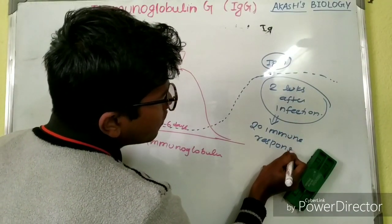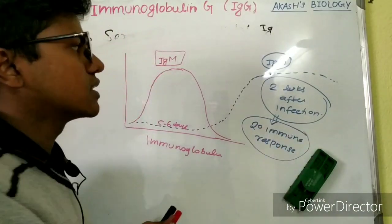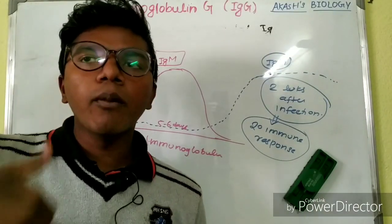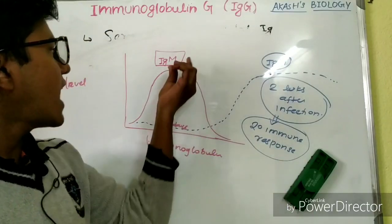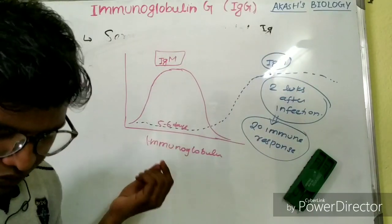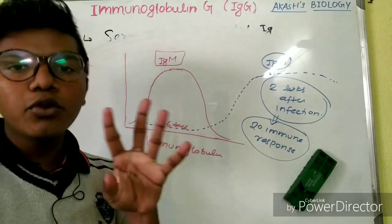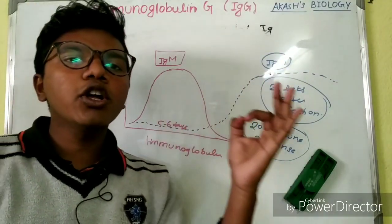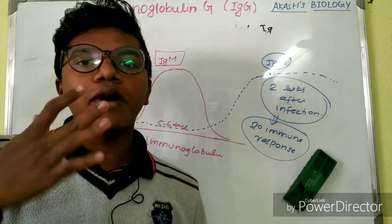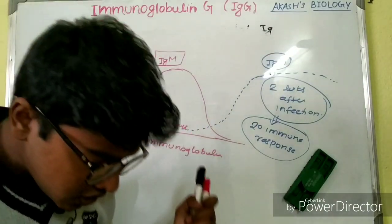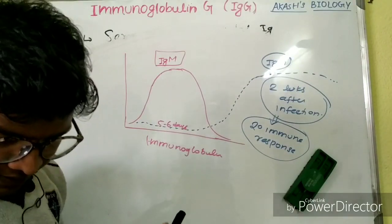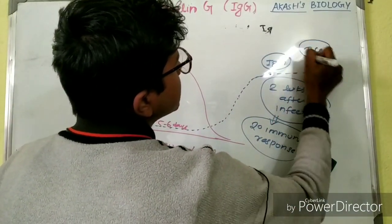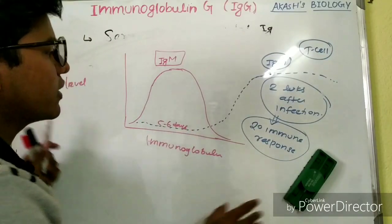If we are deficient in IgG, we will never be cured of infections, because IgG is the immunoglobulin that helps us fight infection during prolonged or chronic illness. IgM only persists for about one to two weeks and is then gone. The main immunoglobulin that persists and fights infection is IgG. For the formation and action of IgG, it requires T cell help — that is, cell-mediated immunity help.